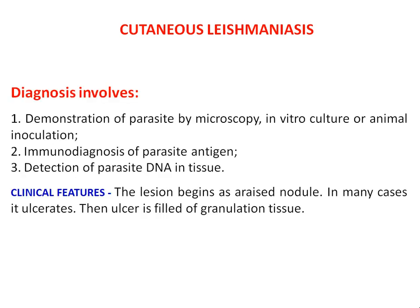Diagnosis involves demonstration of the parasite by microscopy, in vitro culture, or animal inoculation. You can diagnose Cutaneous Leishmaniasis by taking the blood or body fluid of the infected person, which can be examined under the microscope where you can see Leishmania tropica. Immunodiagnosis of the parasite antigen can also be one method. The detection of parasite DNA in the tissue is also one method of diagnosis.